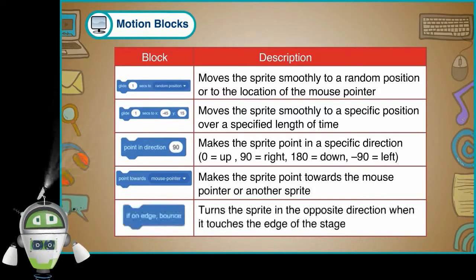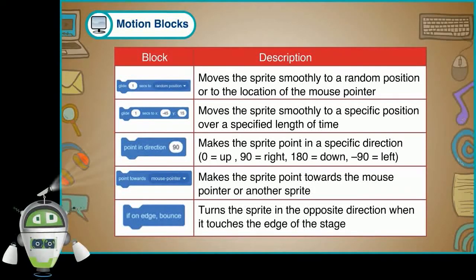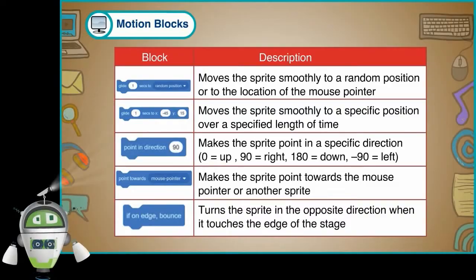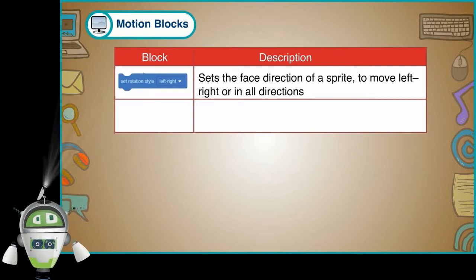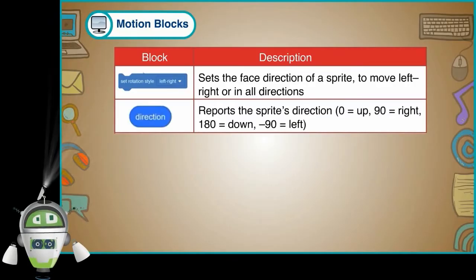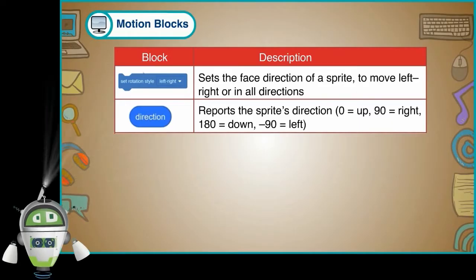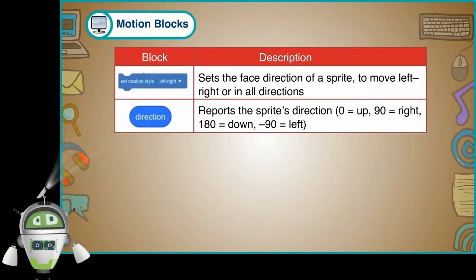If on edge, bounce: Turns the sprite in the opposite direction when it touches the edge of the stage. Set rotation style left-right: Sets the face direction of a sprite to move left, right or in all directions. Direction: Reports the sprite's direction — 0 equals up, 90 equals right, 180 equals down, minus 90 equals left.